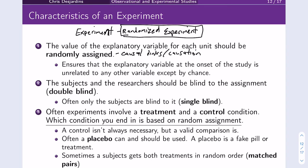Some important characteristics for experiments include being blind — when participants do not know what treatment or value of the explanatory variable they've been assigned to. When it's both participants and researchers, that's double blind. You can even have triple blind, where the subjects, the researchers, and the statisticians doing the analyses don't know which participants were assigned which values of the explanatory variable.